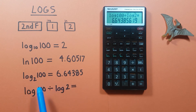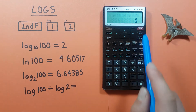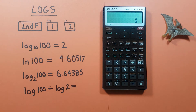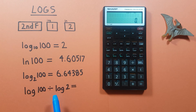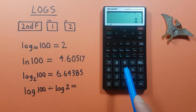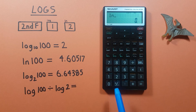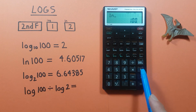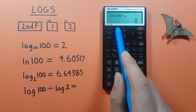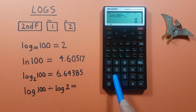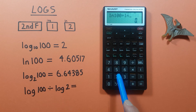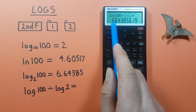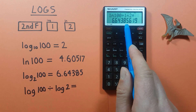This will work with any log base that we need, and we can also use the natural log in this way as well. So if we swapped the log base 10 with natural log, we would get the same result. Natural log of 100, divided by natural log of 2, equals — again we get 6.6438, etc.